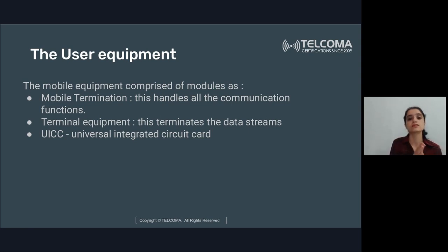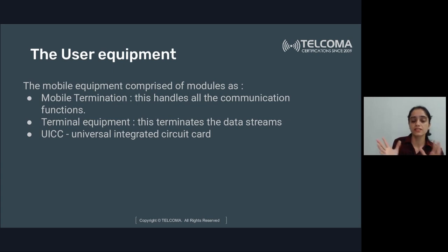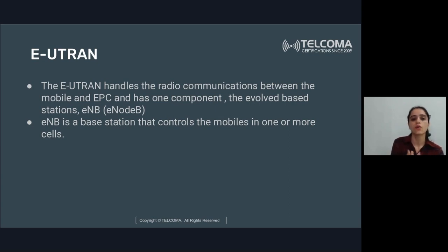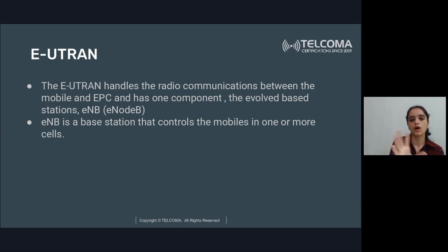User equipment, your mobile handset, comprises three modules: mobile termination, which handles all communication functions; terminal equipment, which terminates the data stream; and the SIM card, also called universal integrated circuit card. E-UTRAN handles the radio communication between the mobile and evolved packet core, and has only one component — evolved Node B, which is a base station that controls mobiles in one or more cells.